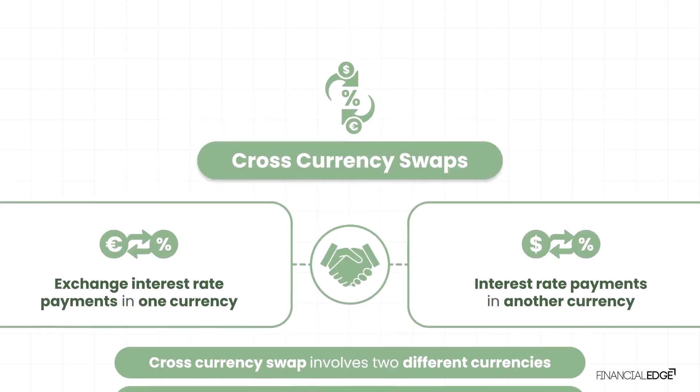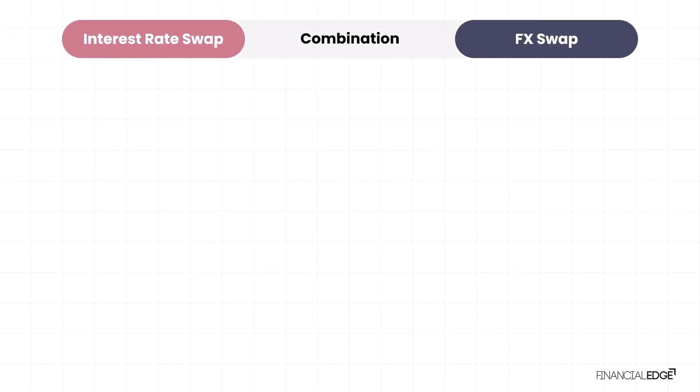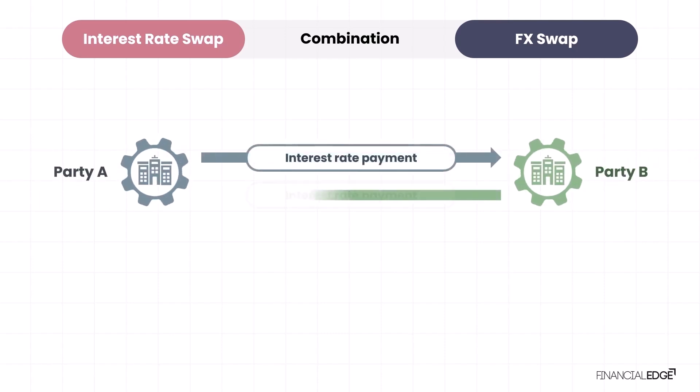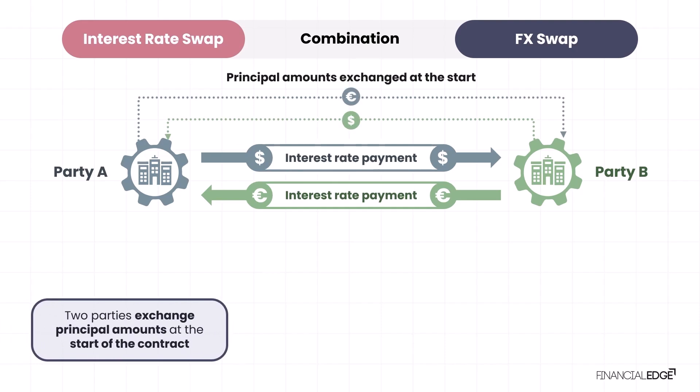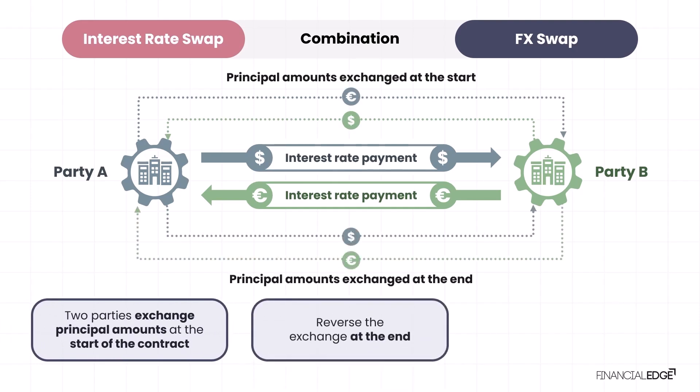Think of cross currency swaps as a combination of an interest rate swap and an FX swap. Like an interest rate swap, the two parties exchange interest rate payments based on a notional amount — the difference is that in a cross currency swap these payments occur in different currencies. Like an FX swap, the two parties exchange principal amounts at the start of the contract and reverse the exchange at the end.